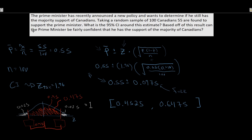Based on this result, can the Prime Minister be fairly confident he has majority support? Given that the interval crosses the 50% threshold — the lower bound is 0.4525, which is below 50% — we cannot be confident that the true population proportion is above 50%. The true proportion could be anywhere in this range, so we can't really discern majority support in this case.